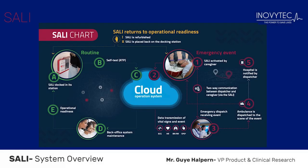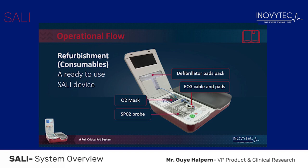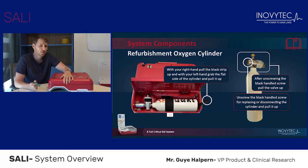The following chart is a summary of the system's operational flow. SALI has a secure cloud-based system that manages its communication and data transmission. During routine time, SALI is docked on its docking station. Every 12 to 24 hours, a routine automated test protocol is sent, verifying that the SALI is ready to be used. During an emergency, once used, the patient's parameters are sent to the emergency dispatch, and the dispatcher evaluates the situation and decides which ambulance to send. Once the event is over, the SALI is refurbished and placed back on its docking station.